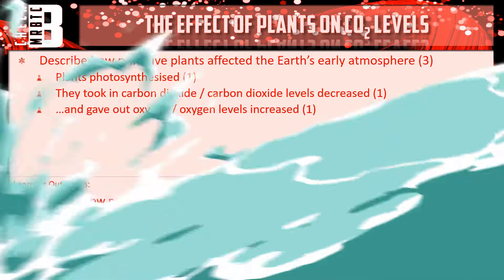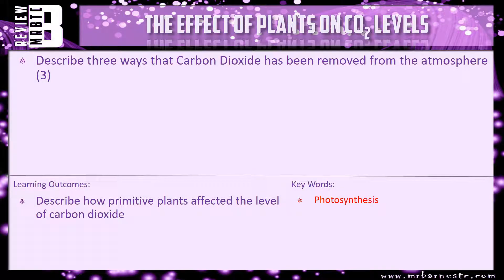I have a review question for you: describe three ways that carbon dioxide has been removed from the atmosphere. One of those is obviously photosynthesis — go into a bit of detail on it — but what were the other two? I mentioned them at the beginning of the video, and I've also got a video on those which I'll link in the top right-hand corner.